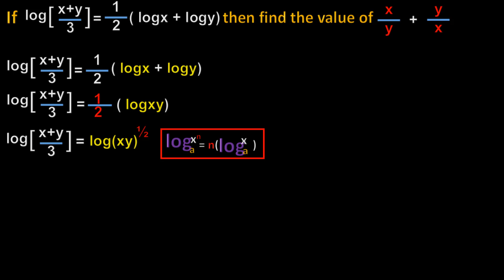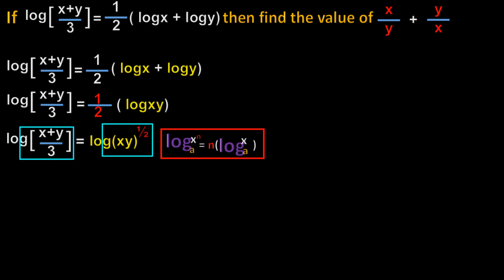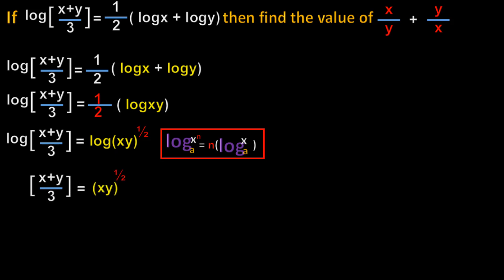Now in this equation we have two equal logarithms where the bases are 10. Since the bases are equal, the numbers must be equal. On the left hand side we have (x + y)/3, and on the right hand side we have (xy)^(1/2). So therefore those must be equal: (x + y)/3 = (xy)^(1/2). Now if we transpose the power 1/2 to the left hand side it becomes square, so we get [(x + y)/3]² = xy.